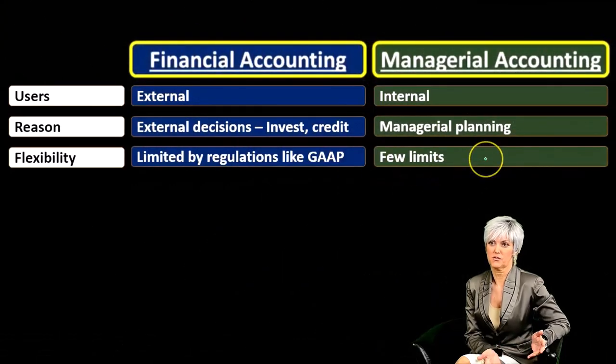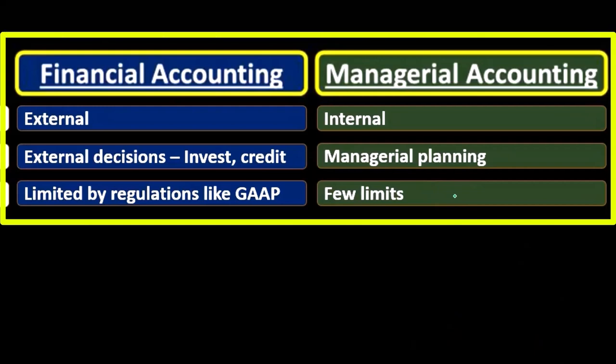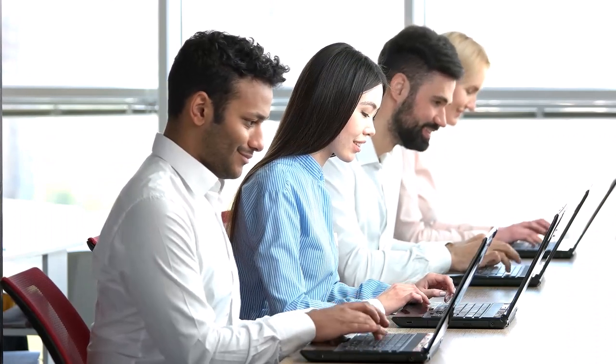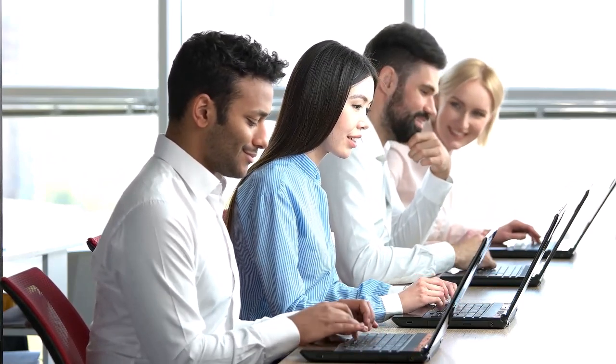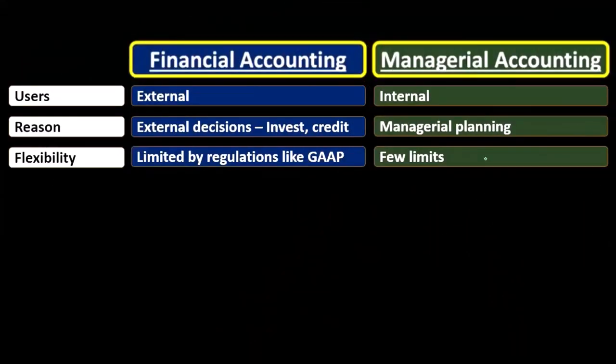Managerial accounting, however, is not limited in the same way. Because we're not giving these reports to anybody outside the company — they're internal reports. We're the ones working and trying to make internal decisions. So we might be making reports about a small group, a small unit, or about some type of product, one product out of many. In order to make those types of decisions, we could format the reports in any way we want, because we're not giving them to external users who are then relying on them to make decisions.